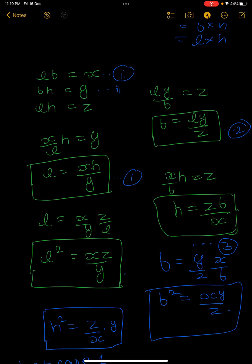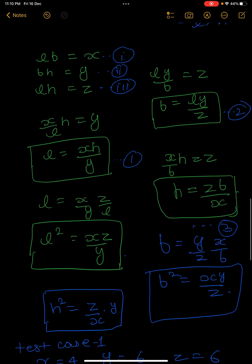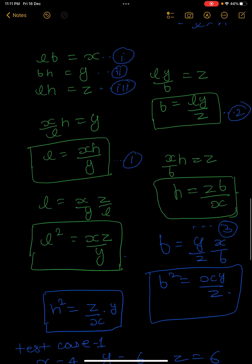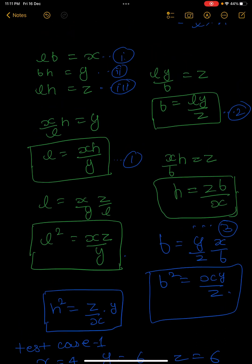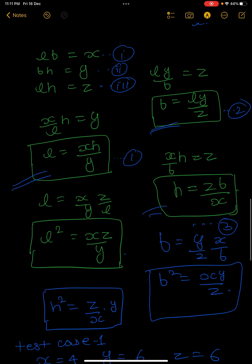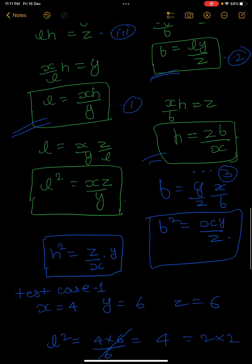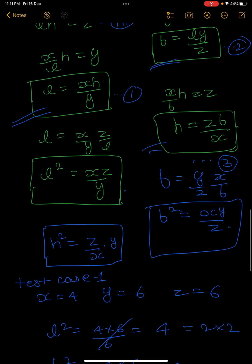These are three equations - let us call them equation first, second, and third. Three equations and three variables, so we can easily calculate the values of length, breadth, and height. If you divide first and second equations, and similarly second and third, you can find out L, B, and H. By solving these equations, you will find L squared, B squared, and H squared.